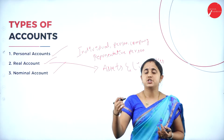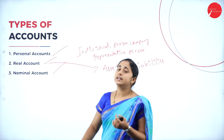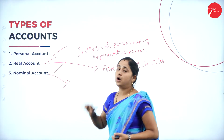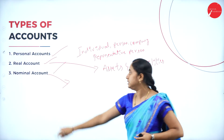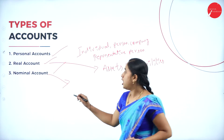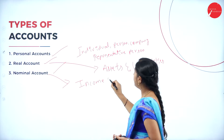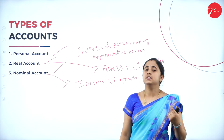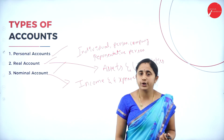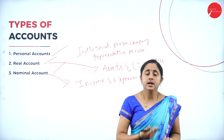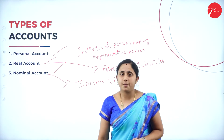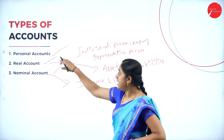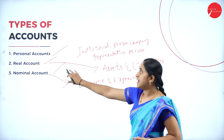Then the last one, nominal account. In personal and real accounts, you consider all persons, individuals, companies, as well as assets and liabilities. The remaining things are expenses and income. So nominal account includes all income and expenses. If any income is earned or expenses incurred for the company, it is considered as nominal account. For example, rent received, rent paid, commission received, commission paid — all this comes under nominal account. In a given transaction, you need to identify all income and expenses, assets and liabilities, as well as persons. This is the classification of accounts.